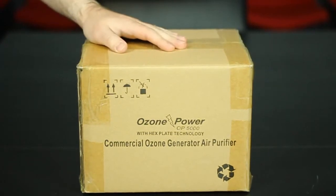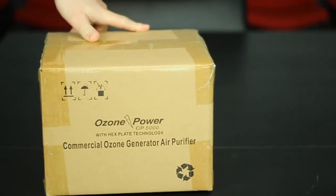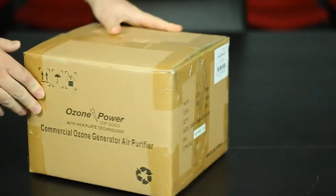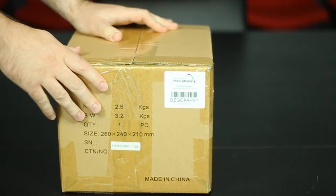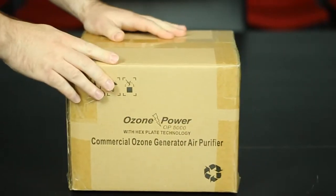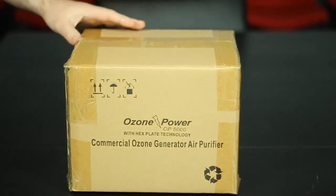When you receive your ozone generator, it's going to come in a brown shipping box. The first thing you want to do is inspect it to see if there's any damage. If there is any damage, contact our customer service team right away because it could indicate that the unit inside is damaged. So if there's no damage, go ahead and open it up.